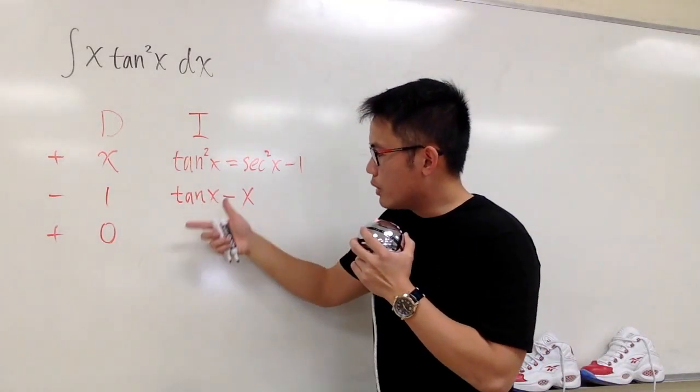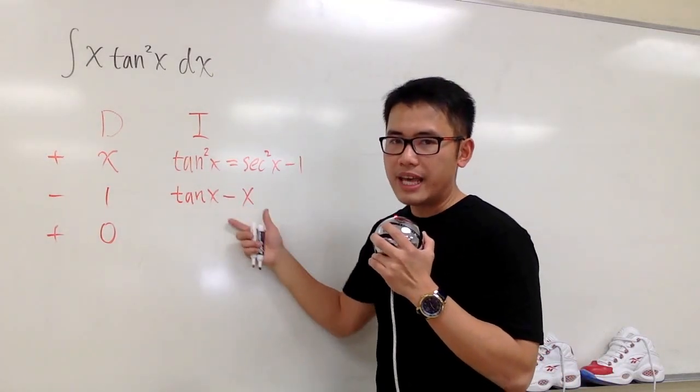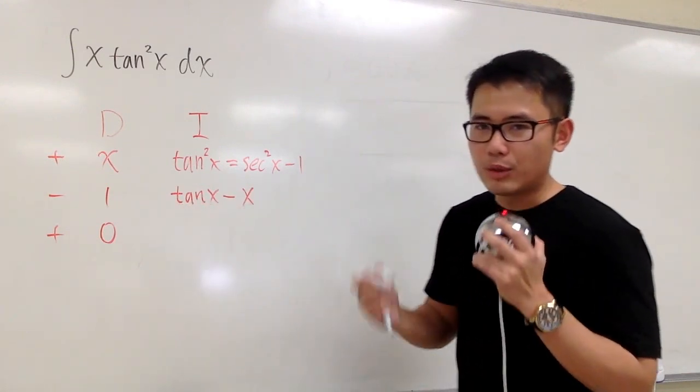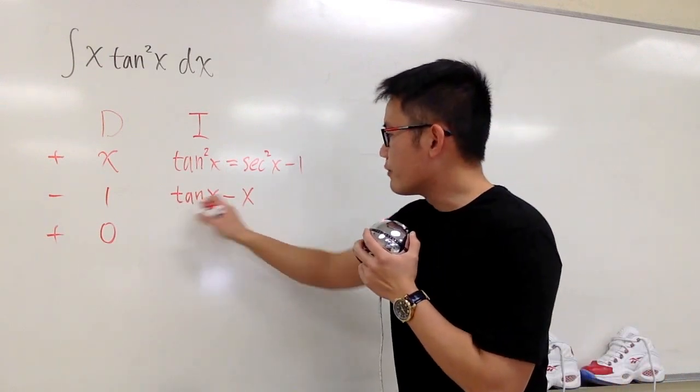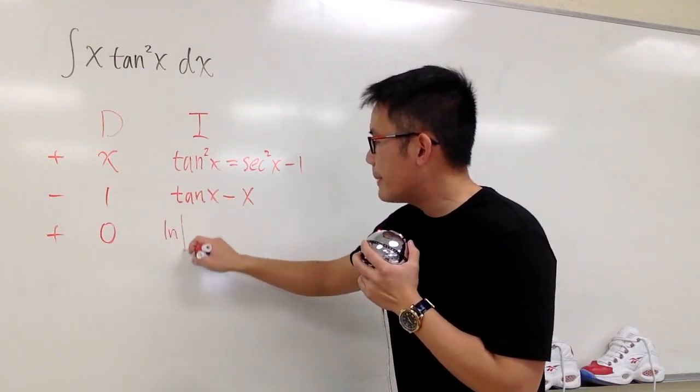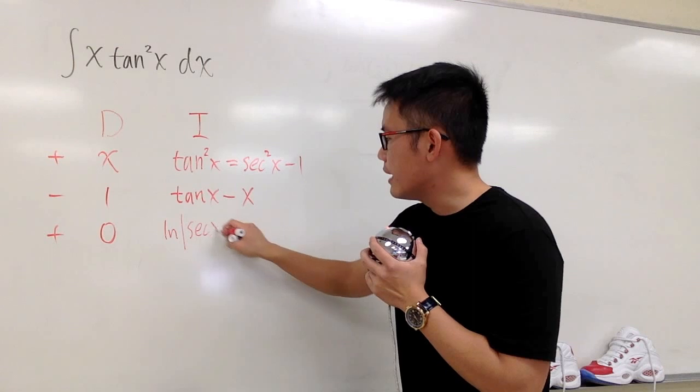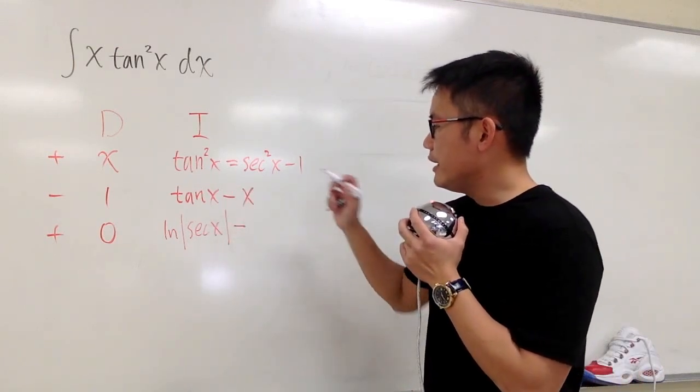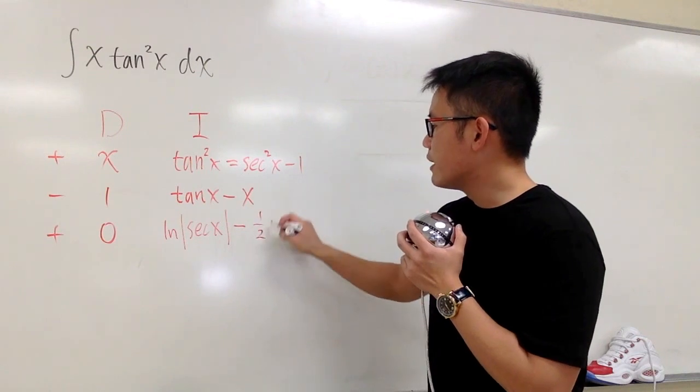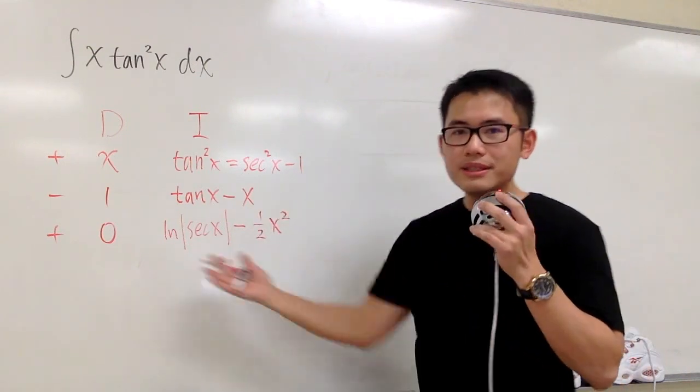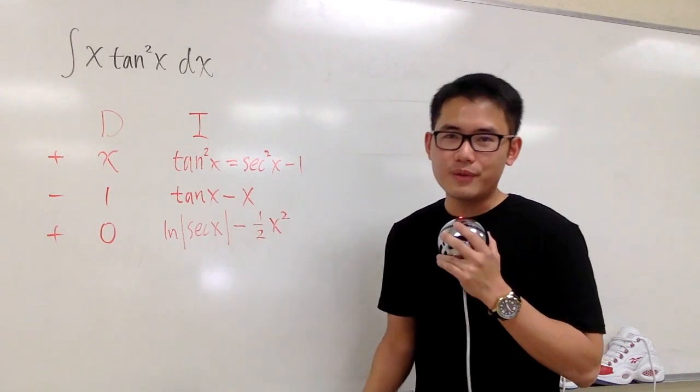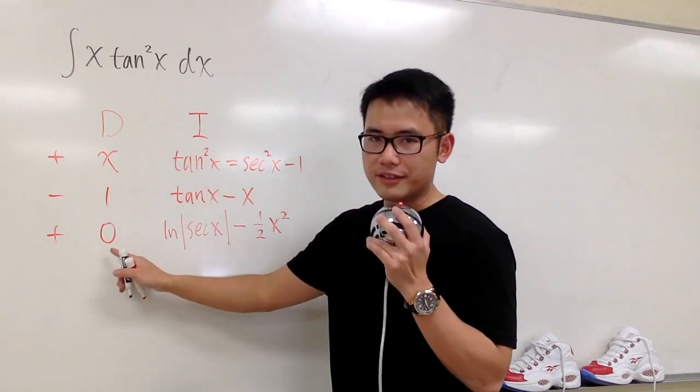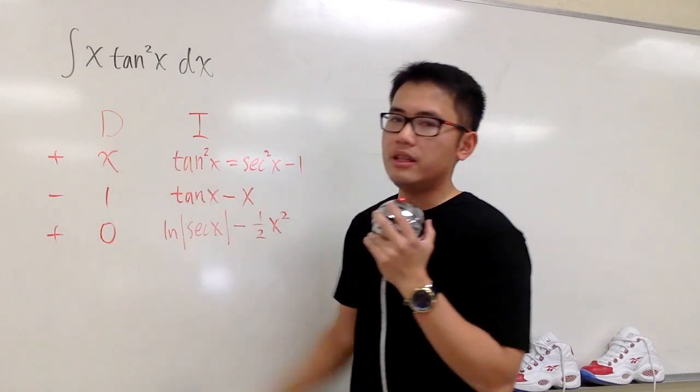Well, I need to go ahead and integrate this guy again, right? Can we do it? Yes, we can, because the integral of tangent x is something that we have to remember. The integral of tangent x is ln absolute value secant x. And then minus the integral of x is just 1 half x to the second power. And you see, these are the ingredients and I can write down the answer for you guys. Once again, we stop right here because this is the first kind of stop. We have the 0 in the D column.